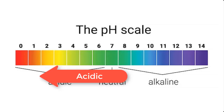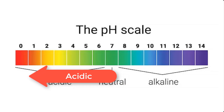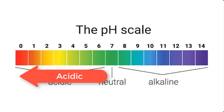Acidity increases from 6 to 0. This means that 0 is more acidic than 1, and 1 is more acidic than 2. This also means that 6 is the least acidic on the pH scale.